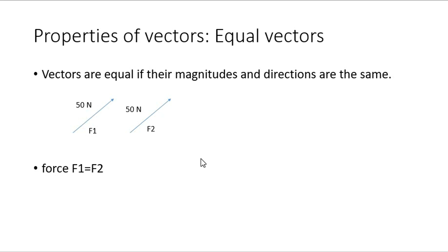Properties of vectors: if we have two vectors and they are equal — vectors of equal magnitudes and directions are parallel to each other, therefore they are equal. In the example, 50 newtons is F1 and F2 is also 50 newtons. Therefore the forces are equal and they are the same.